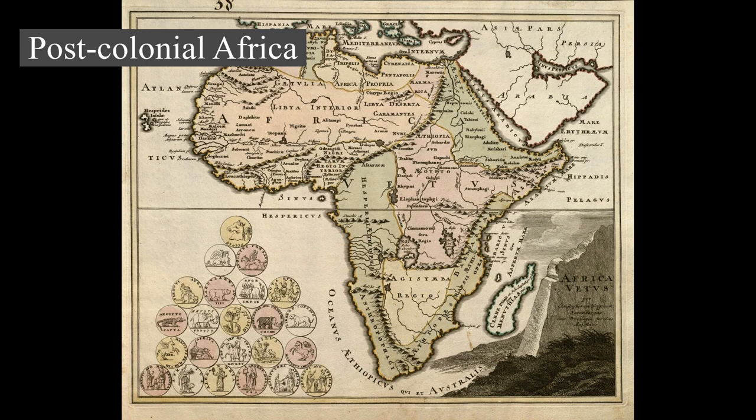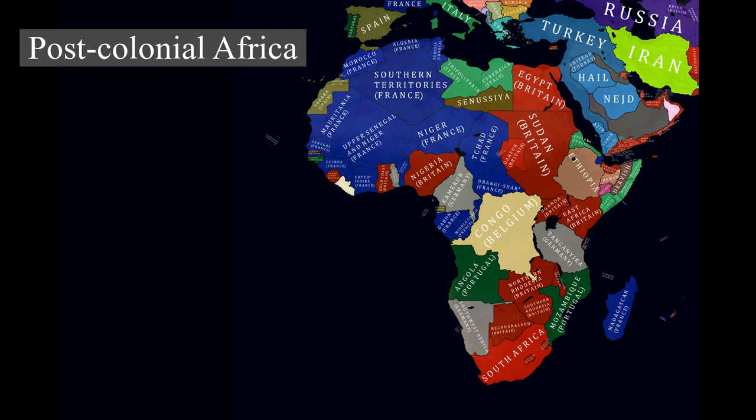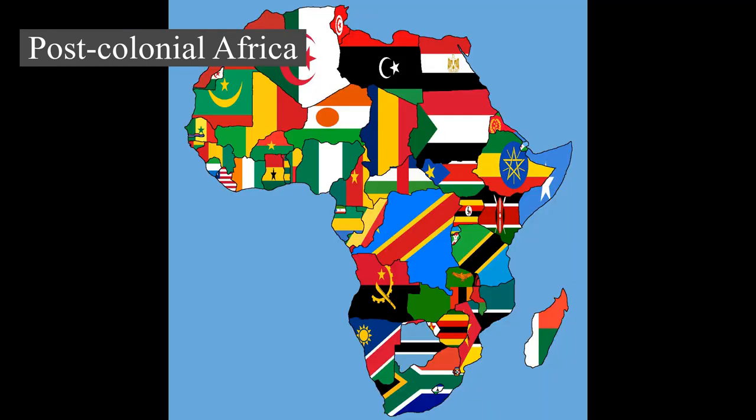Most African conflicts have been reduced to low-intensity conflicts as of 2022. However, the Tigray War, which began in 2020, has killed an estimated 300,000–500,000 people, primarily due to famine. Overall, though, violence across Africa has greatly declined in the 21st century.